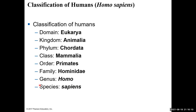A way to remember this hierarchy: 'Dear King Philip Came Over For Great Soda.' Domain, Kingdom, Phylum, Class, Order, Family, Genus, Species.